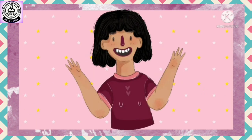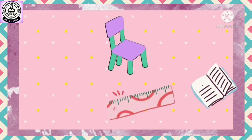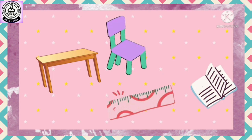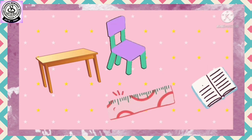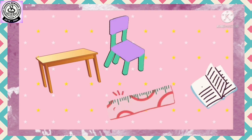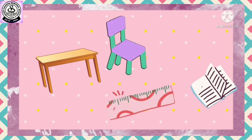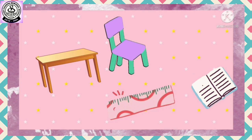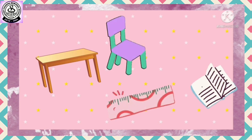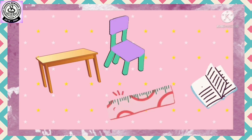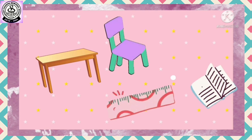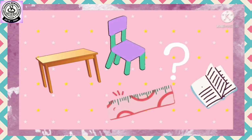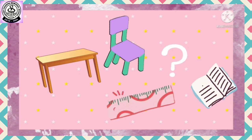I guess you all have memorized the objects. Now let's see the objects again. What are the objects here? Table, chair, scale, copy. So which object is missing here, kids? We have seen table, chair, scale, copy. There are only four objects — which object is missing here?